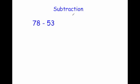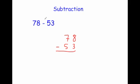In this video we're going to look at subtraction. Here's an example: 78 subtract 53. The number that comes first goes on top, so you write 78, and then we're going to subtract 53. I've lined them up in columns — the units, the 8 and the 3, and then the tens, the 7 and the 5, lined up with each other.